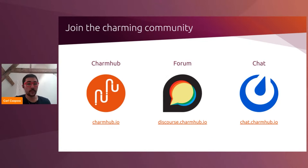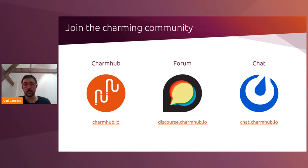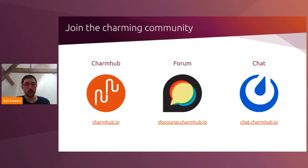We encourage you to get involved in the Charming community. First, there's CharmHub, which is a listing or store of Charms. You can find Charms written by members of our community and staff at Canonical, and you can also publish your own Charms to CharmHub. There's our forum, which is a great place to ask questions, or if you've learned something you'd like to share with other developers, the forum is a great place to do that asynchronously. And finally, there's our chat, or Mattermost — an instant messaging platform similar to Slack, where members of our community and engineers at Canonical are active and happy to answer questions. If you see a Charm on CharmHub that you're interested in contributing to, the chat is a great place to connect with the developers.